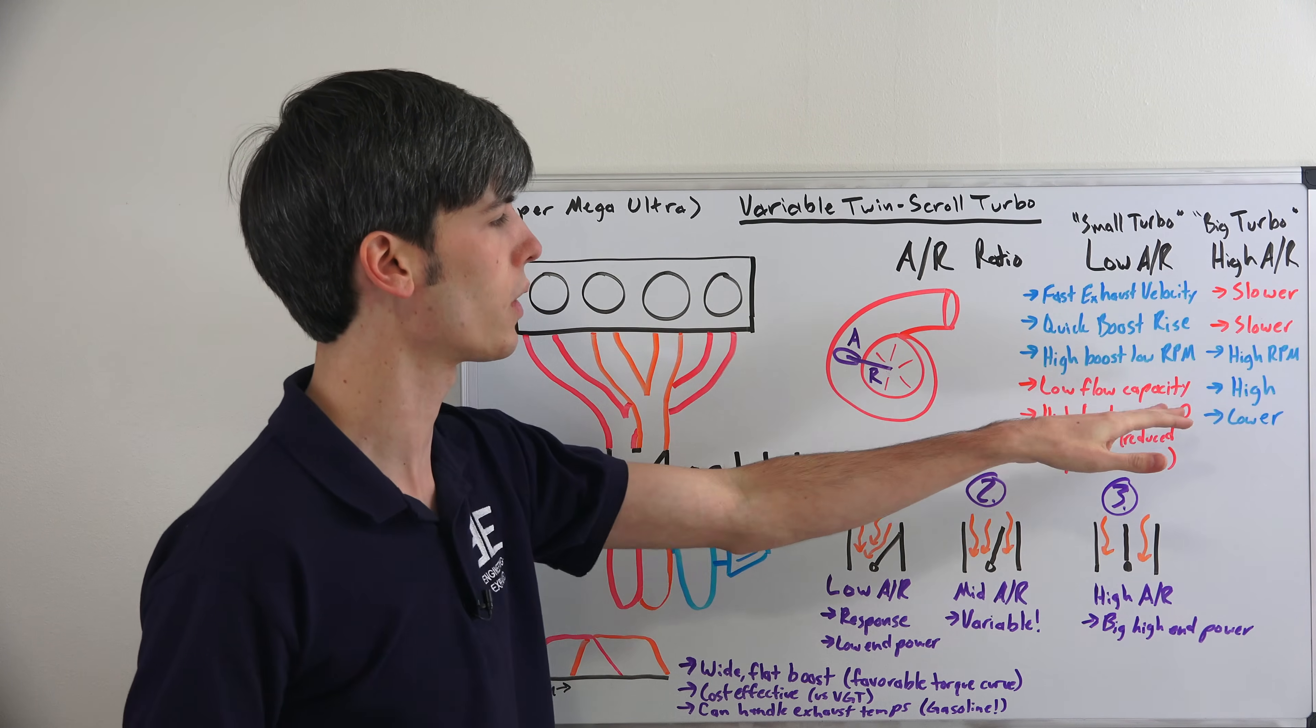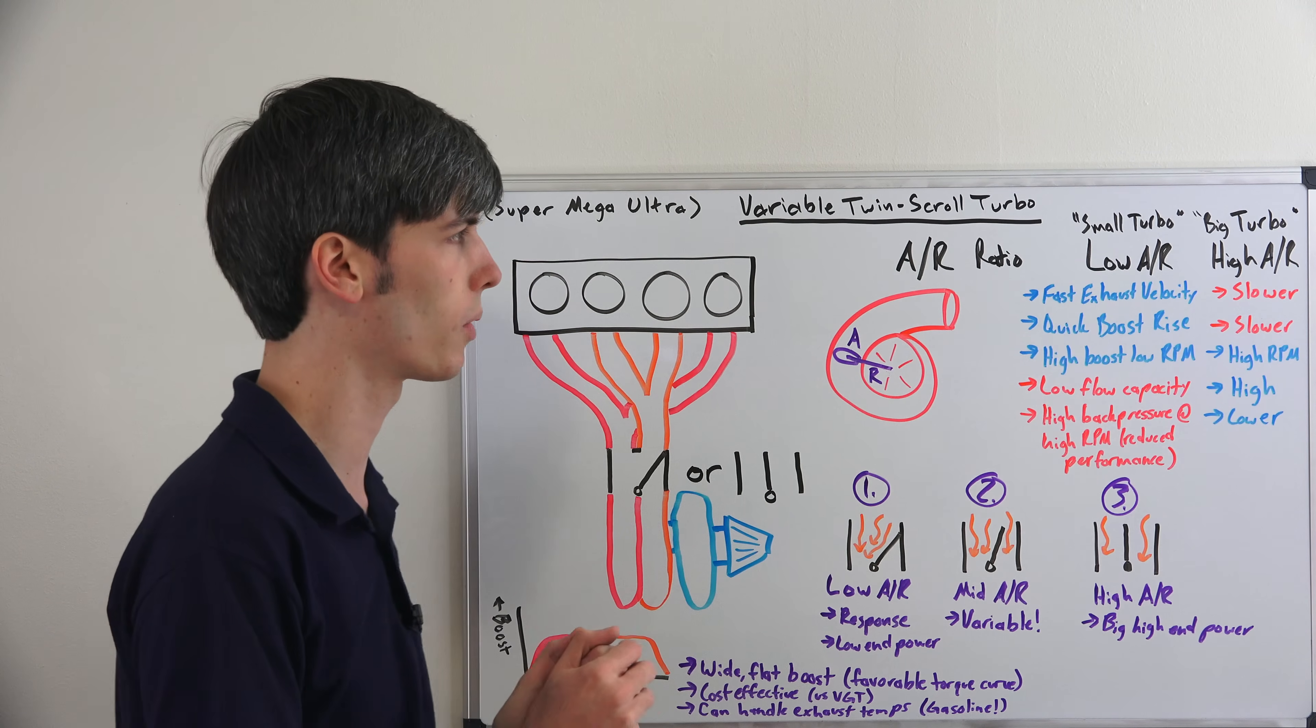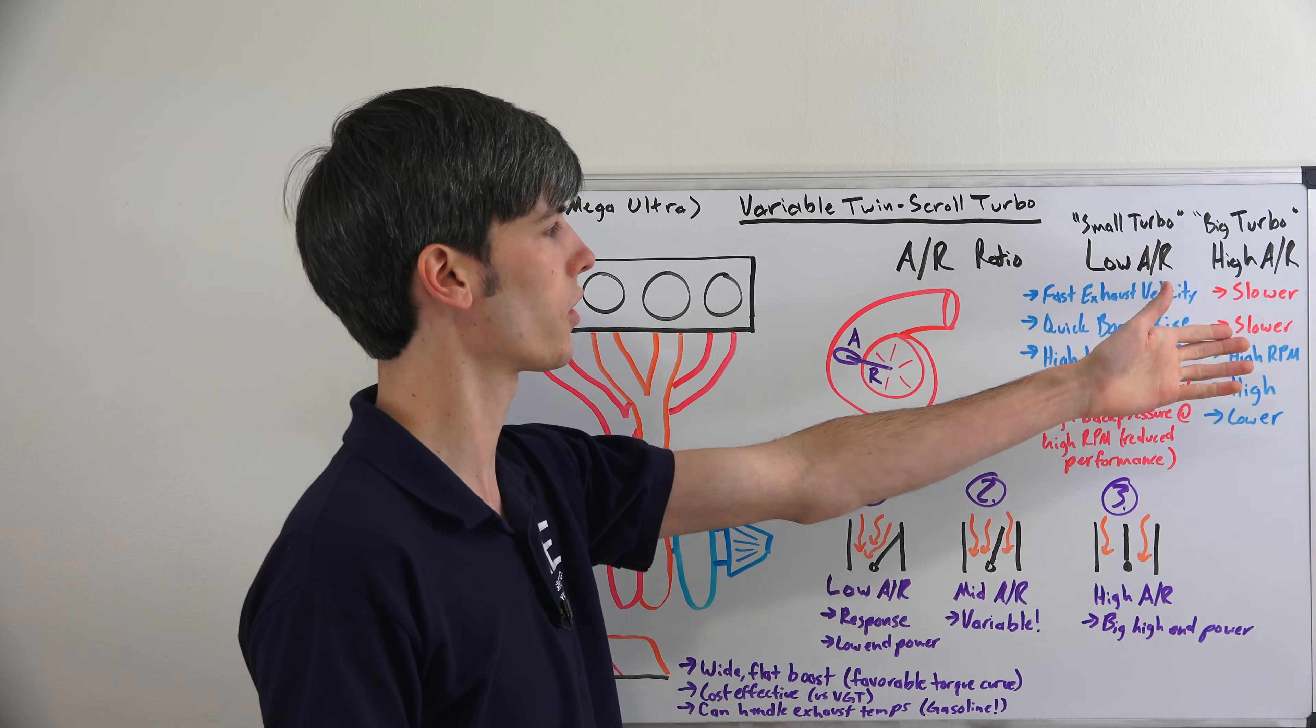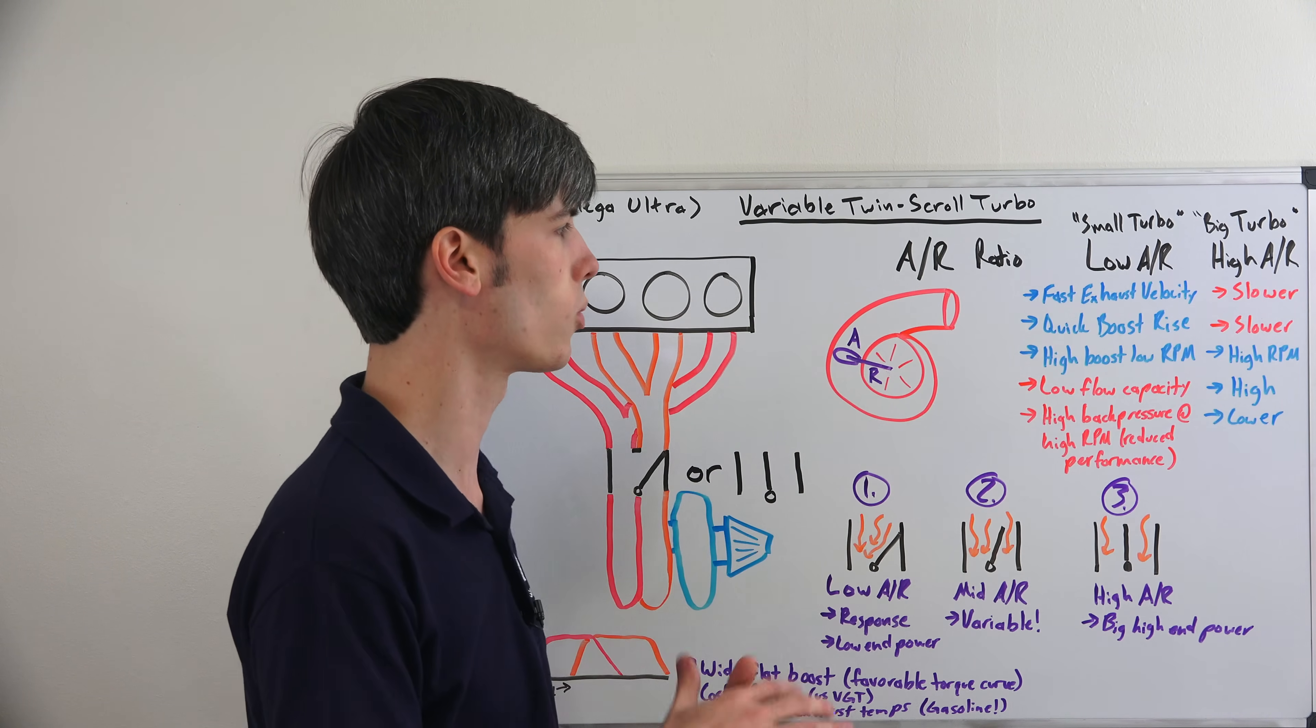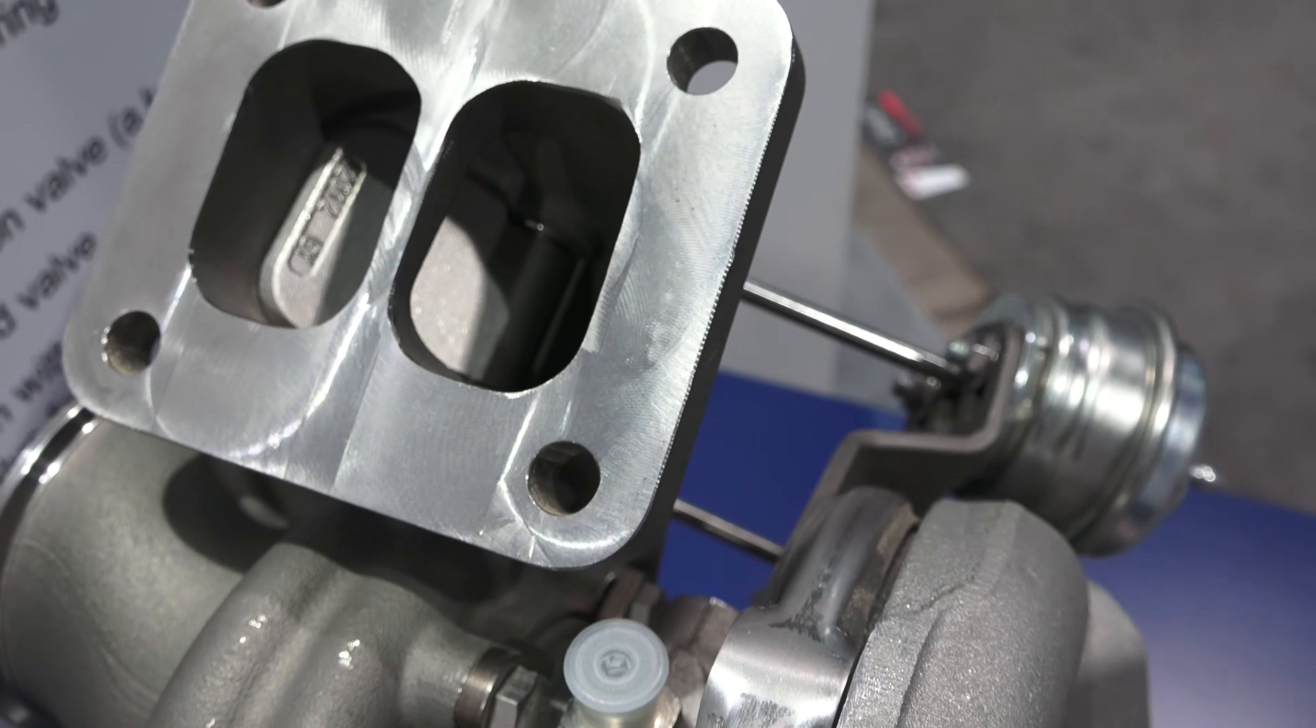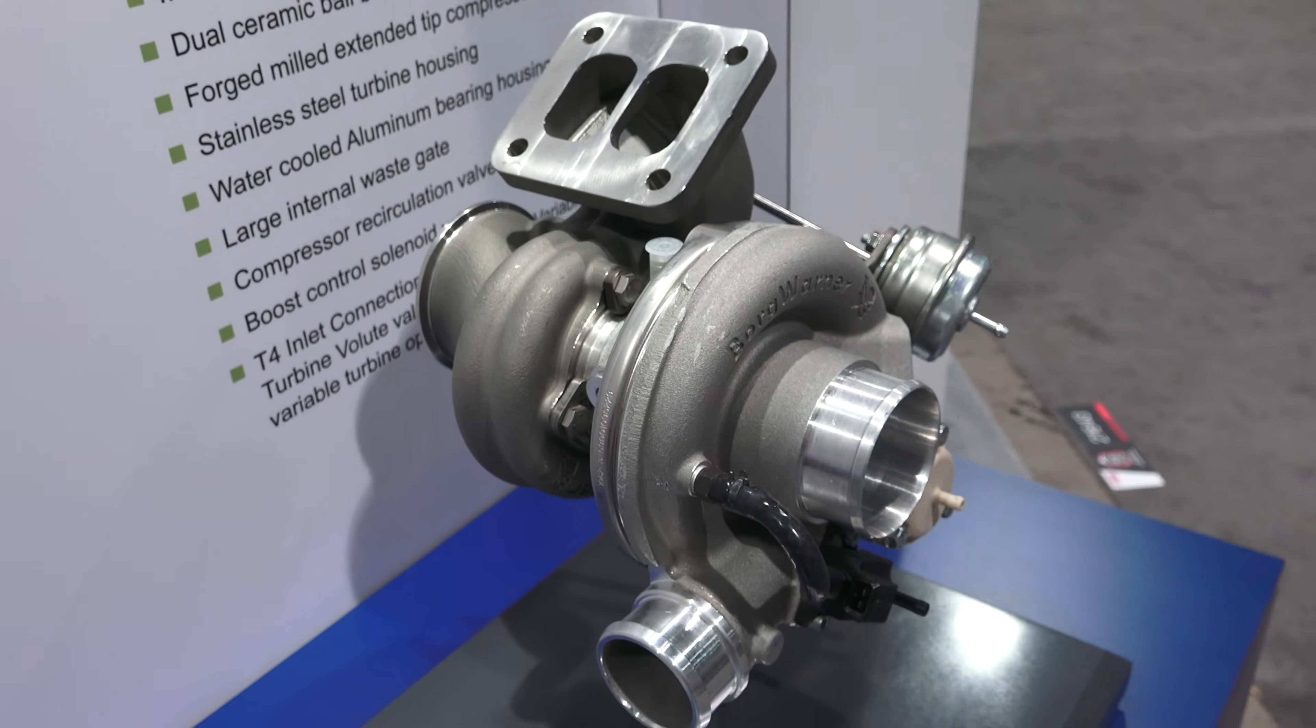But you're restricted in your flow capacity, and once you get up to the higher RPMs you get a lot of back pressure and it reduces the performance of the turbocharger. On the other hand, if you use a giant turbo with a high AR ratio, you're going to have slower exhaust velocities, slower boost rise, so it's not going to seem quite as responsive. But you're going to have high boost at high RPM, high flow capacity which means you can make more power on the top end, and you're going to have lower back pressure at these higher RPMs as a result of having a higher flow capacity.